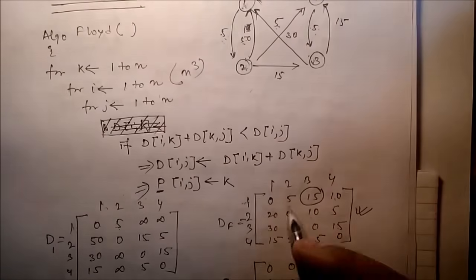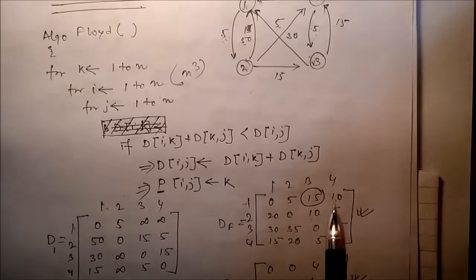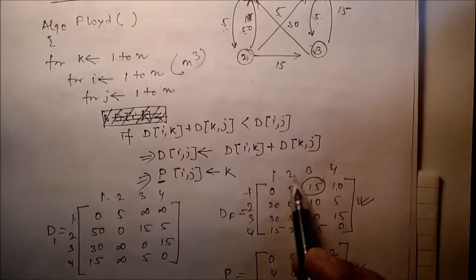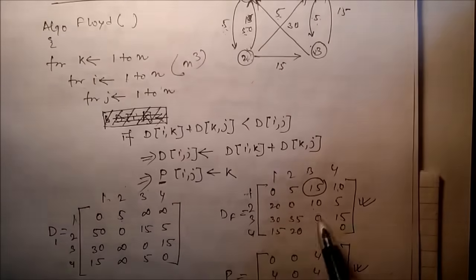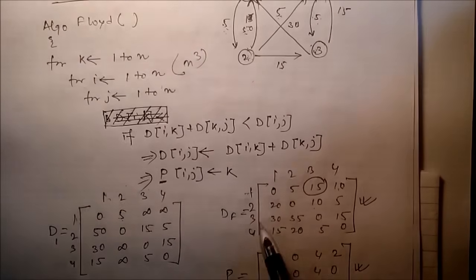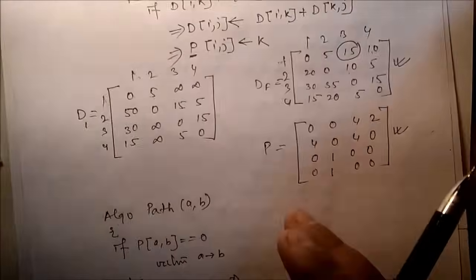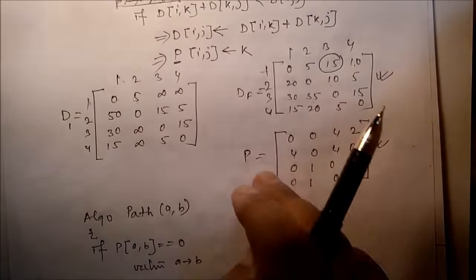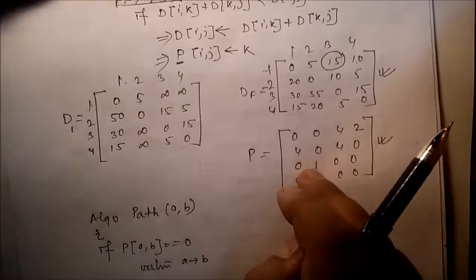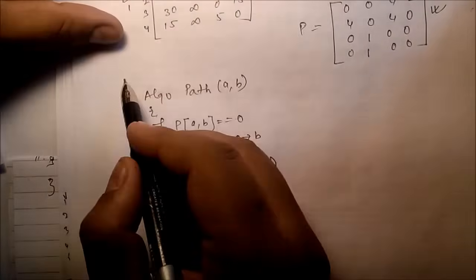This D table doesn't indicate what the path is or what route to follow. To find the actual route, we have to use the P matrix, and the algorithm for that is as follows.